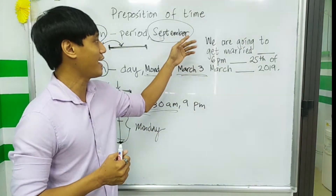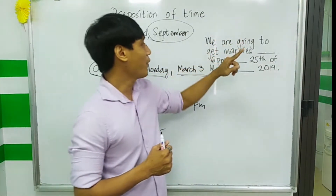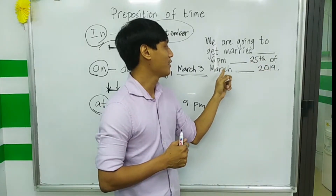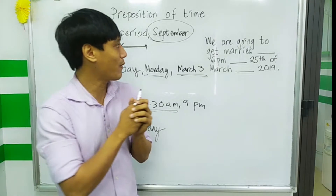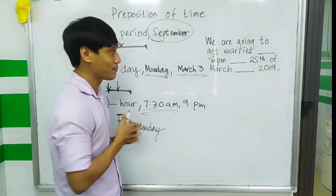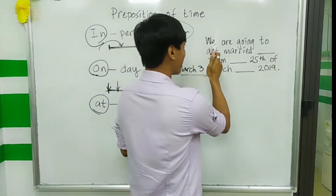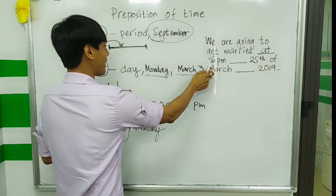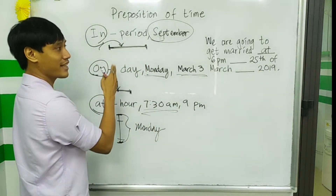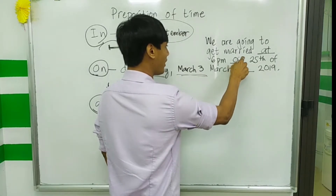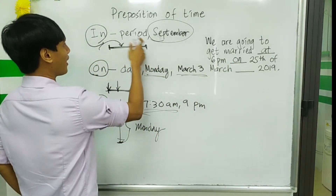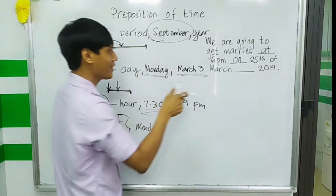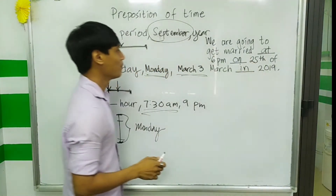Let's practice with this sentence: 'We are going to get married ___ 6 p.m. ___ 25th of March ___ 2019.' The answer is: 'We are going to get married at 6 p.m.' — because that's a time — 'on the 25th of March' — because that's a complete date — and 'in 2019' — because a year is a period.